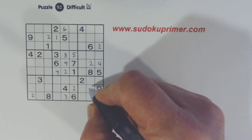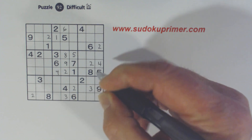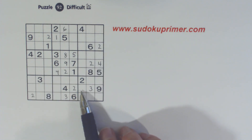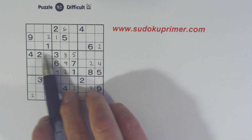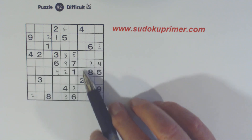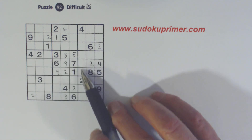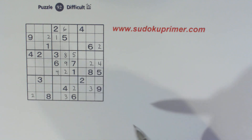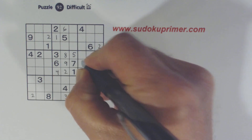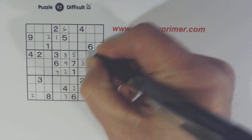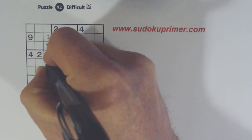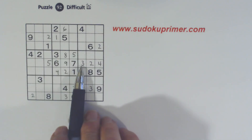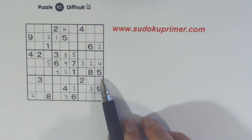Now we can place a 3 here. If you look at these threes and wonder whether the 3 can go here — up here we've got a 3 in this row, so we have ghost threes right here, so we know that's not a 3. Then we can place a 3 and a 5 in this row because these are 1-8 twins, so 3 and 5 are the only numbers left, and there's a 5 there.